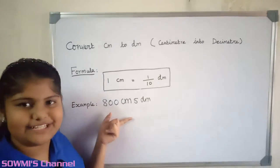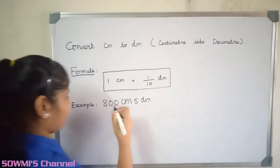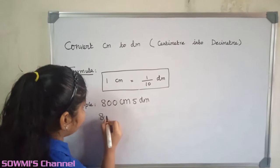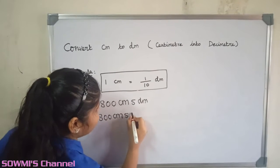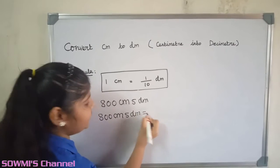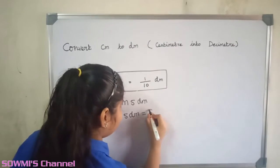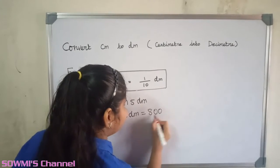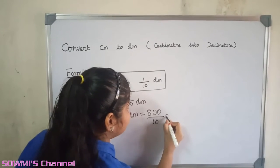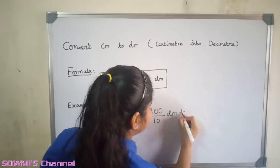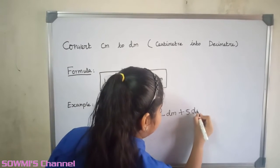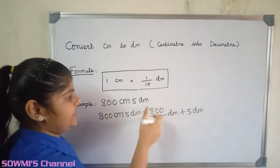800 centimeters 5 decimeters. 800 centimeters 5 decimeters is equal to 800/10 decimeters plus 5 decimeters. Here 0 and 0 gets cancelled.